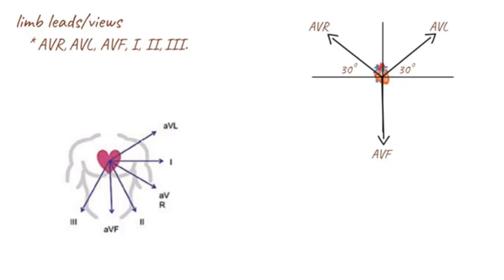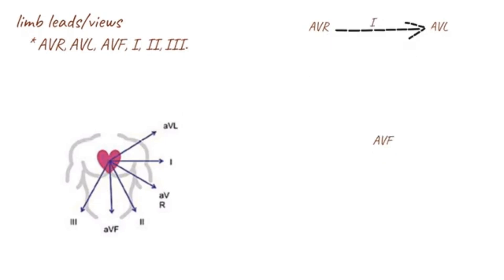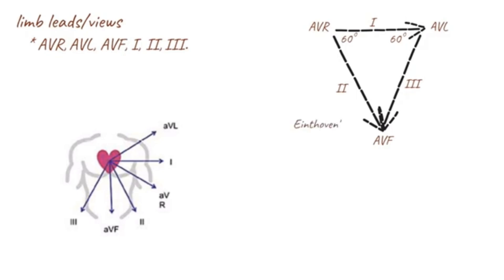The three leads create a triangle known as Einthoven's triangle. Leads 1, 2, and 3 are bipolar leads because they have two associated electrodes. Lead 1 gathers information between AVR and AVL. Lead 2 gathers information between AVR and AVF. Lead 3 gathers information between AVL and AVF.